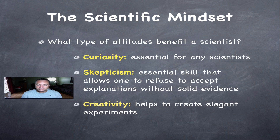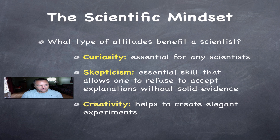In this first part on the scientific mindset, what type of attitude do you need to be a good scientist? Well, the first thing you need is curiosity. Curiosity is essential for any scientist because as they walk through the natural world, they're always looking at things and wondering why that happened or what caused that. Every good scientist has that ability to be extremely curious.